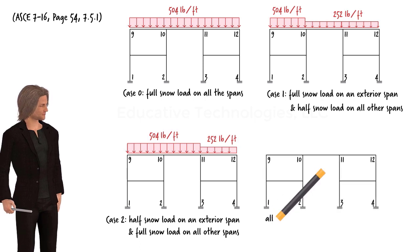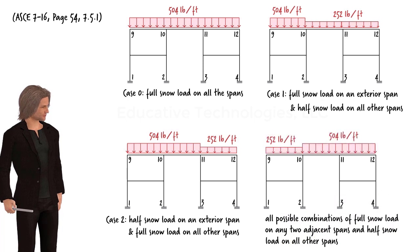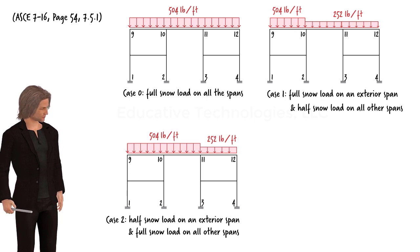Case 3. Any two adjacent spans are subjected to the full snow load, while the remaining spans carry only half the load. For our frame, this loading case turns out to be identical to case 2. Therefore, we can omit it from further consideration.